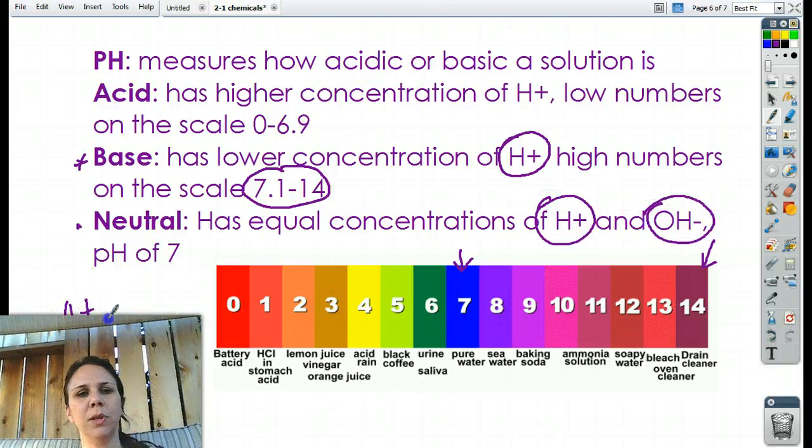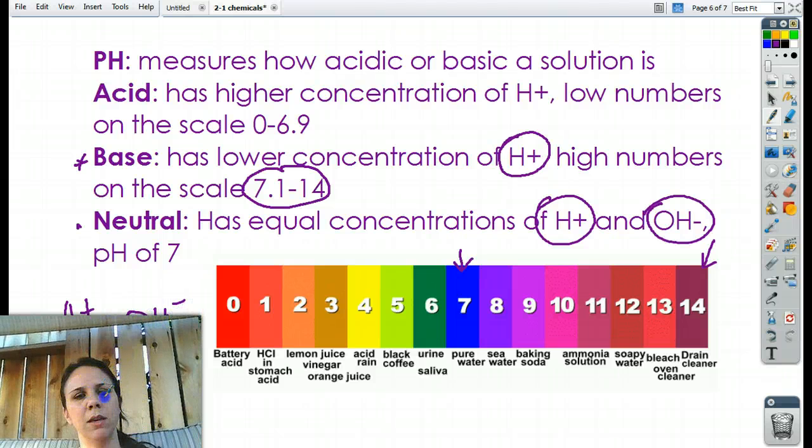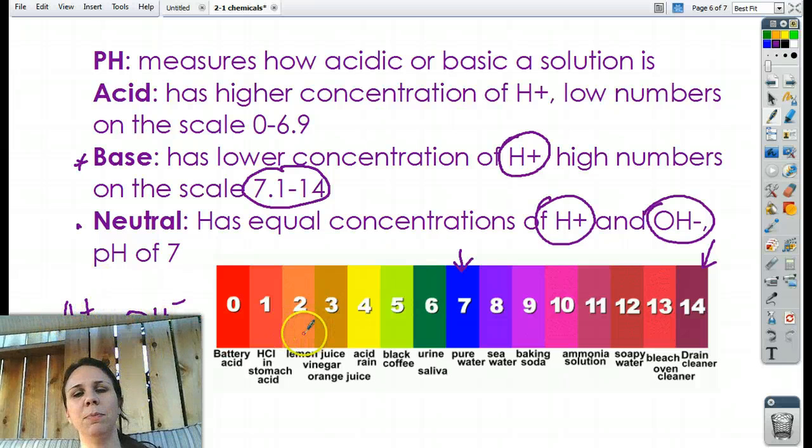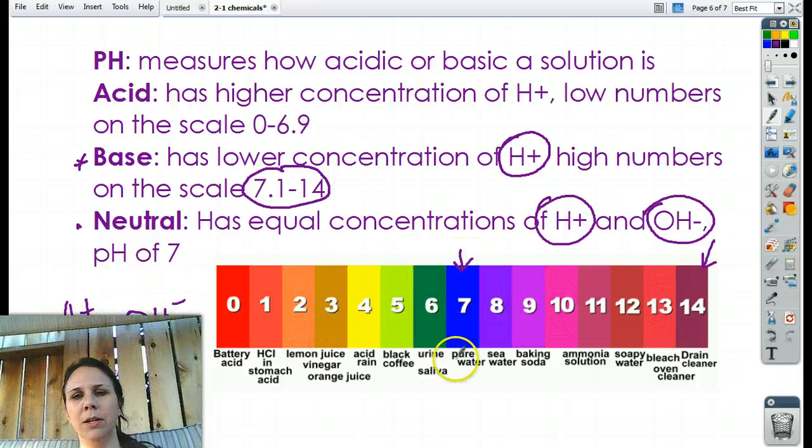Which, if you notice, an H plus and an OH minus, if I stick them together, what do they make? Hey, look at that. Water. H2O. So, the more H's I have, the more acidic. The more OH's I have, which means the less H's I have, the more basic I am. Now, if I'm right in the middle, pure water, then I have equal concentrations of H plus and OH minus.